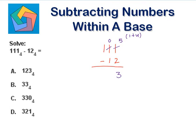Now, 0 minus 1. 0 is less than 1, so we need to borrow again. This becomes 0, and this becomes 4. 0 plus 4 is 4. So 4 minus 1 is 3.